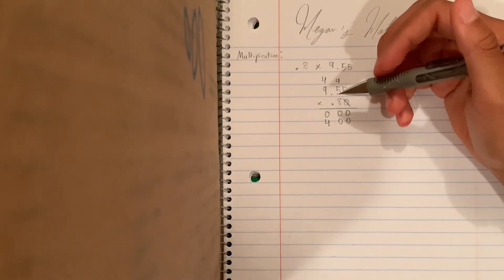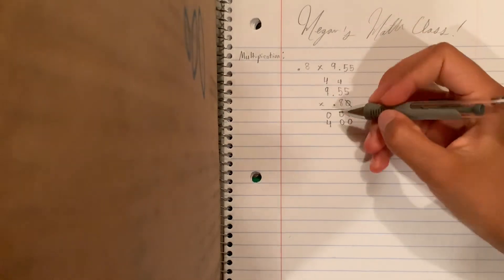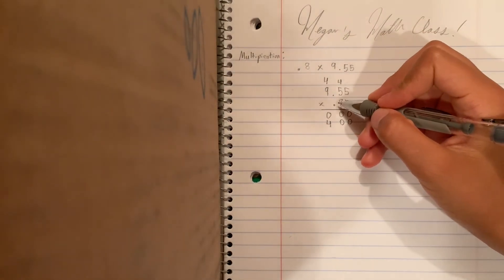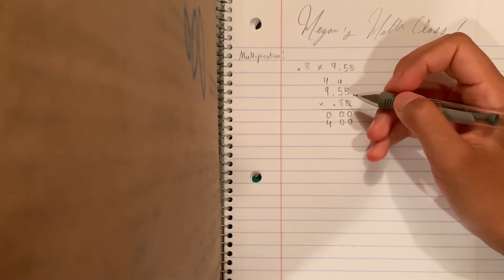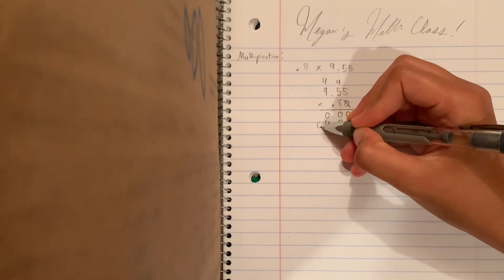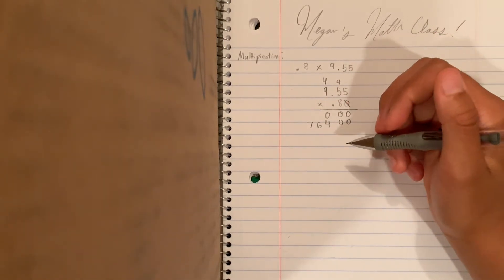And then, last but not least, 8 times 9 is 72. So, and then 72 plus 4 is 76. So we're just gonna add that 76 right there. Oh yeah, baby.